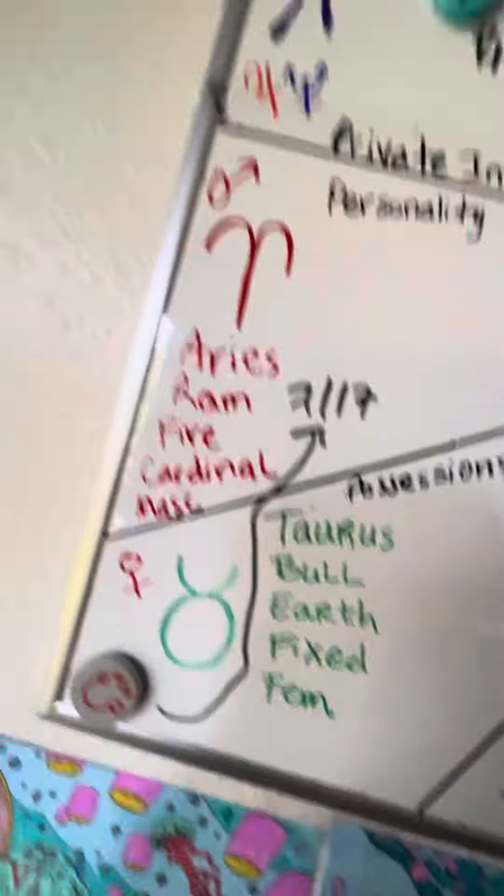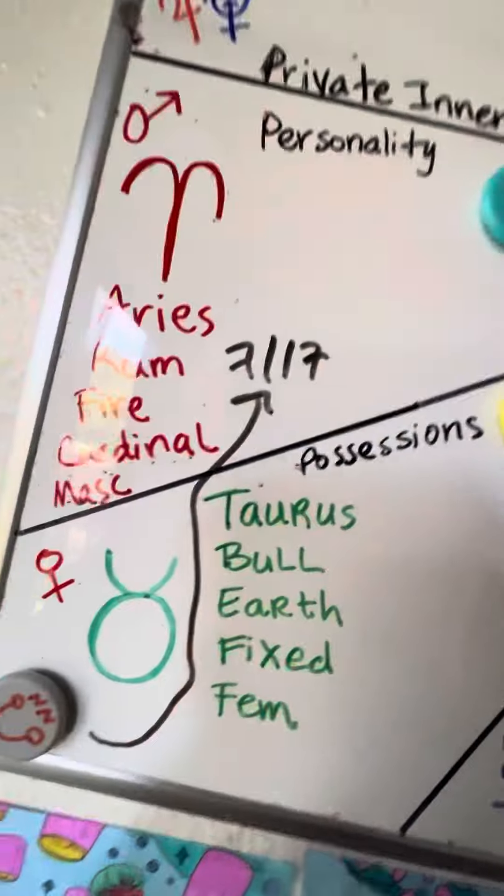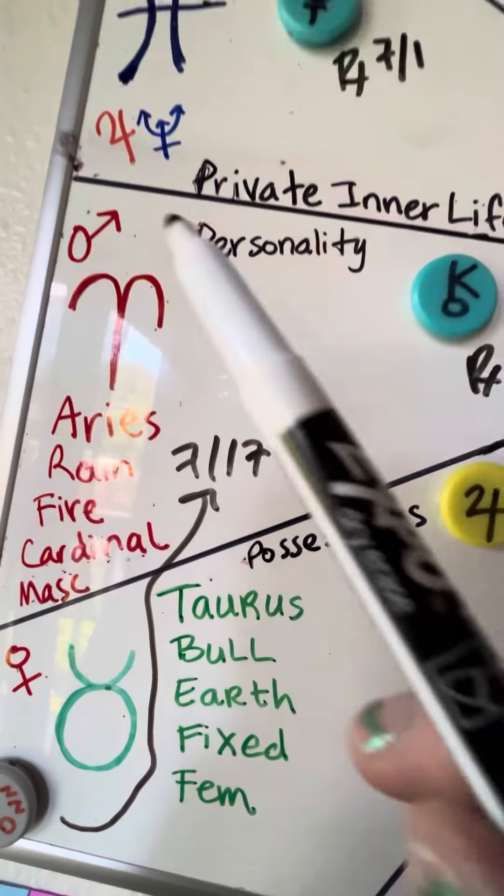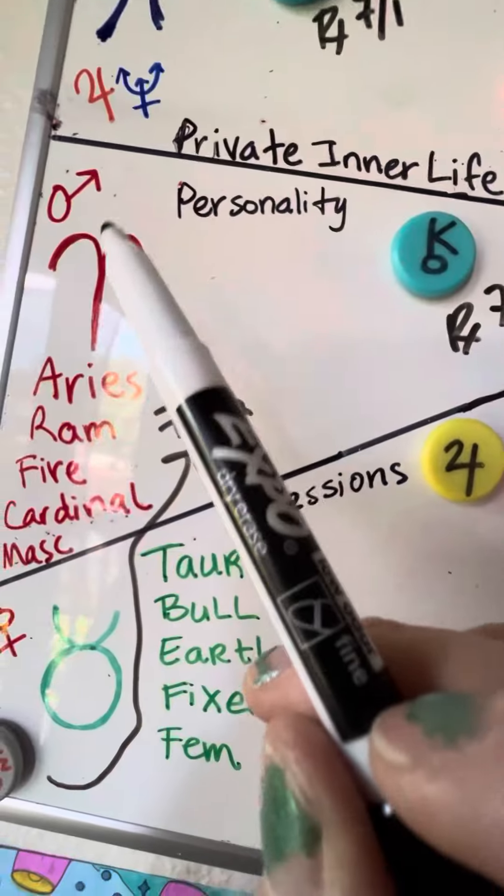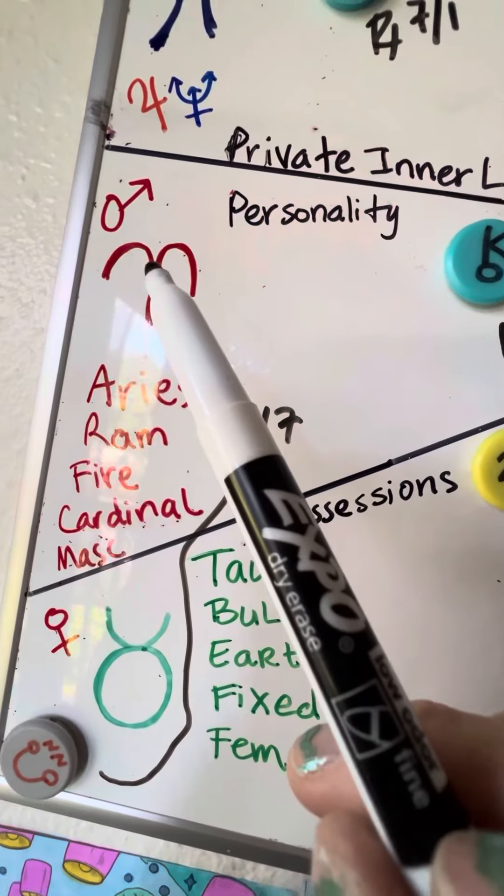So each of the houses has the symbol for the zodiac that belongs in that house. It has the house number, it tells you the information about the zodiac, and it also has the planet symbol that rules that zodiac.